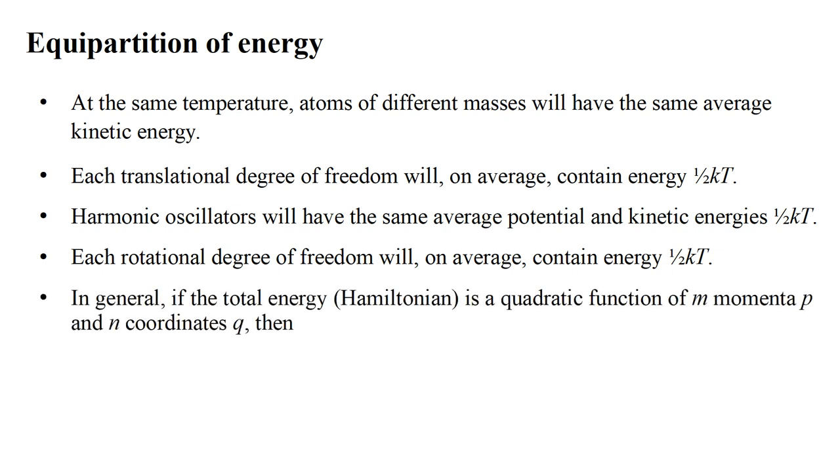More formally, in general, if the total energy, the so-called Hamiltonian of the system, is a quadratic function of m momenta p and n coordinates q, of the form a_1 p_1 squared plus a_2 p_2 squared and so on, plus b_1 q_1 squared plus b_2 q_2 squared and so on. Here the q's can be translational coordinates, distances, or rotational coordinates, angles. The p's are the corresponding linear or angular momenta.